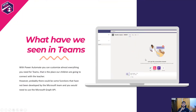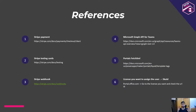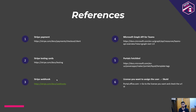So what we've seen in Teams is that we created a connection between the teacher and the child — easy to do. The references include the Stripe payment documentation, testing cards, webhooks, the Microsoft Graph API for Teams, portal fetchXML to retrieve teachers dynamically, and how to add a license. All those references are in the slides so you don't forget.